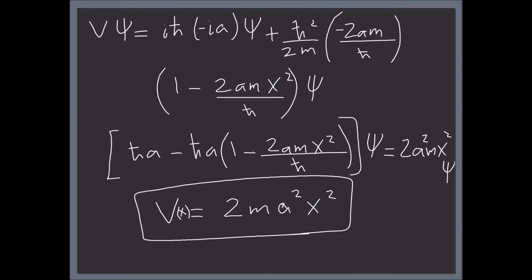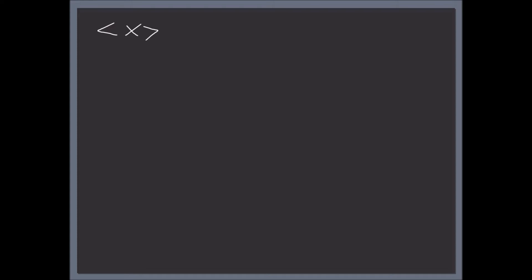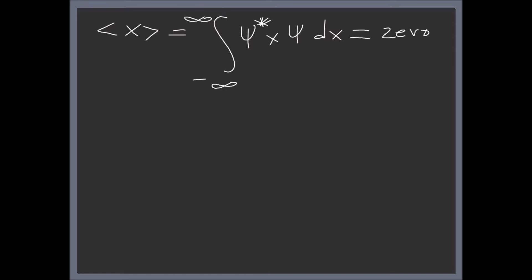The third part is to find the expectation value of x. We sandwich x between psi-star and psi. But psi-star times psi is a Gaussian, and with one factor of x this gives us an odd integral. The value of an odd integral over all space is zero, so the expectation value of x is 0. This will save you a lot of time on these problems.